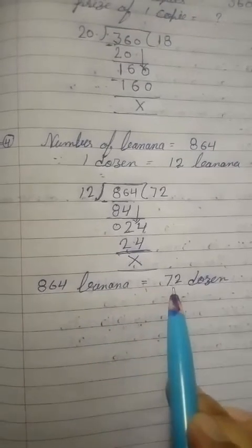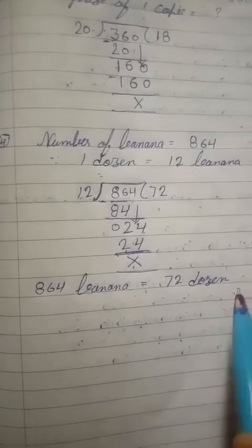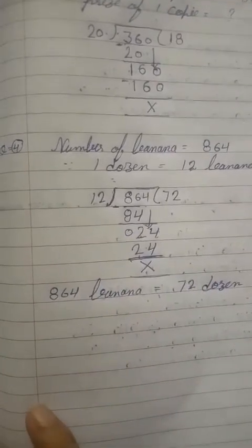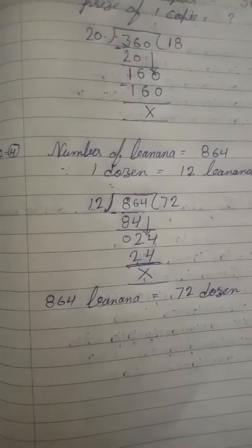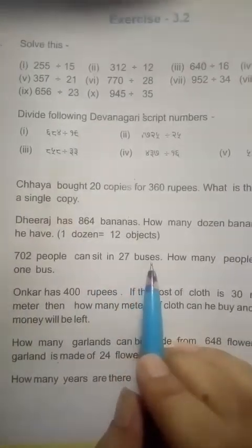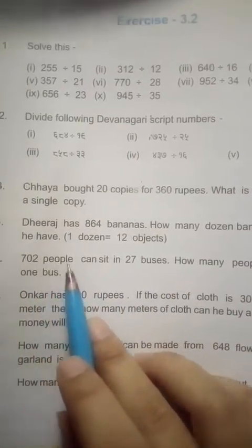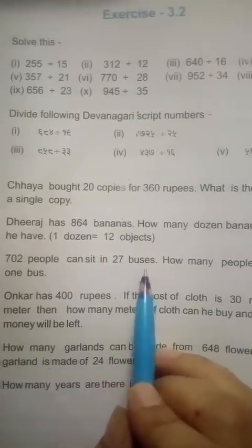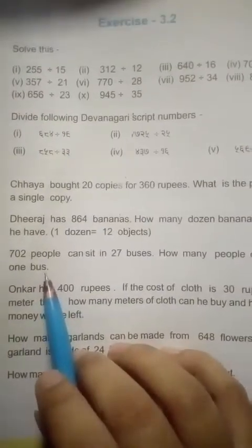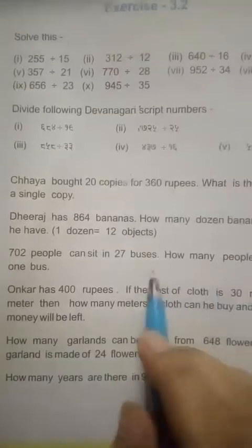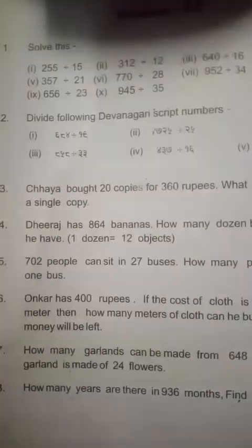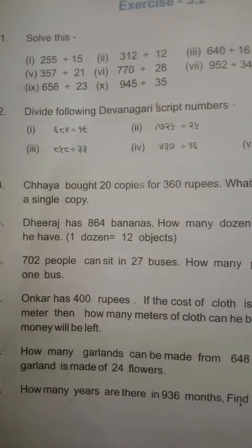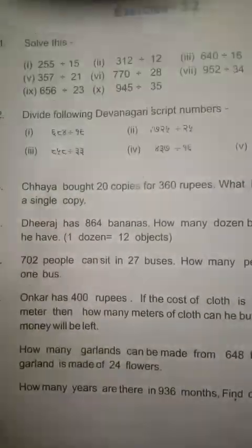So the remainder is 0 and the quotient is 72. The answer is 72. 864 bananas equal to 72 dozen. Complete question 4. Next question, question 5. Read out question 5 in the book.